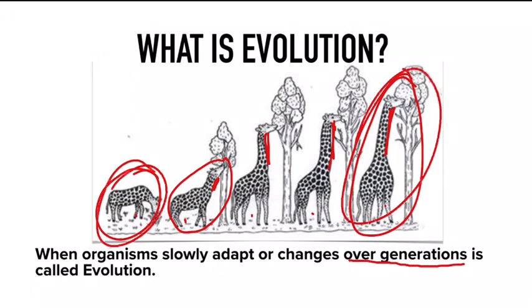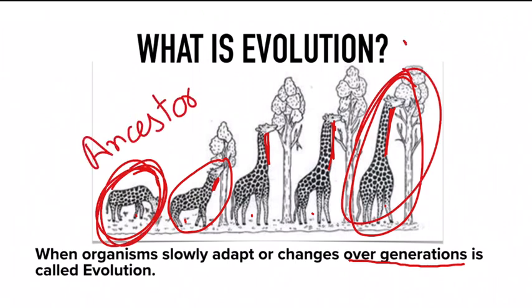This original giraffe we can call an ancestor — ancestor means a member of the past family — and the modern giraffe is the current modern family.